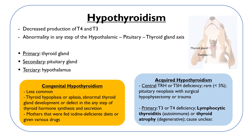Central hypothyroidism is rare, accounting for less than 5% of hypothyroid dogs. It usually results from pituitary neoplasia and surgical hypophysectomy, but it can also result from trauma.